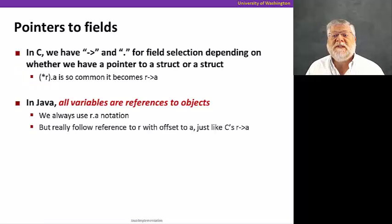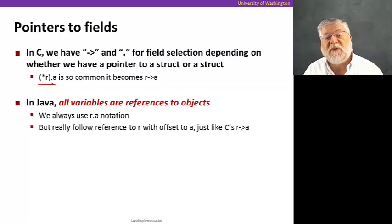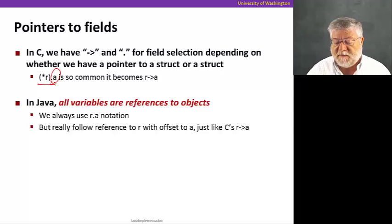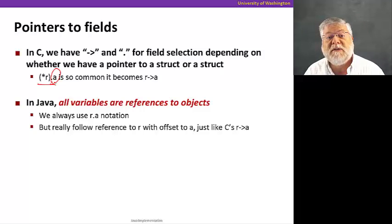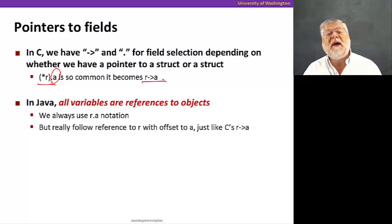Pointers to fields in C, we've seen before just in the last video. We've seen that the common construct is to have a pointer to a struct, dereference it, add an offset to a particular field. This is such a common situation of referencing a field in an object to which we have a pointer, to a struct to which we have a pointer, that we have a shorthand in C, r arrow a, which encapsulates that dereference there.